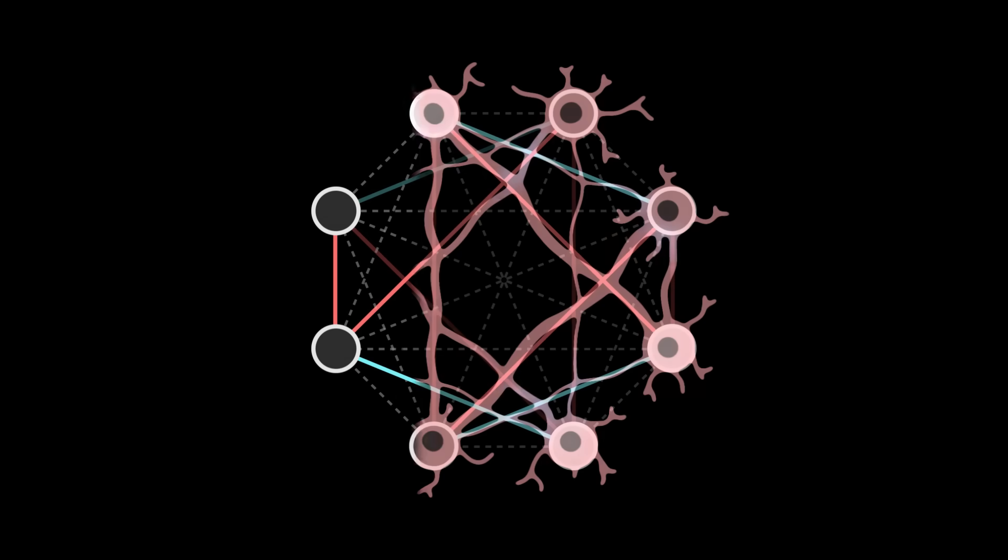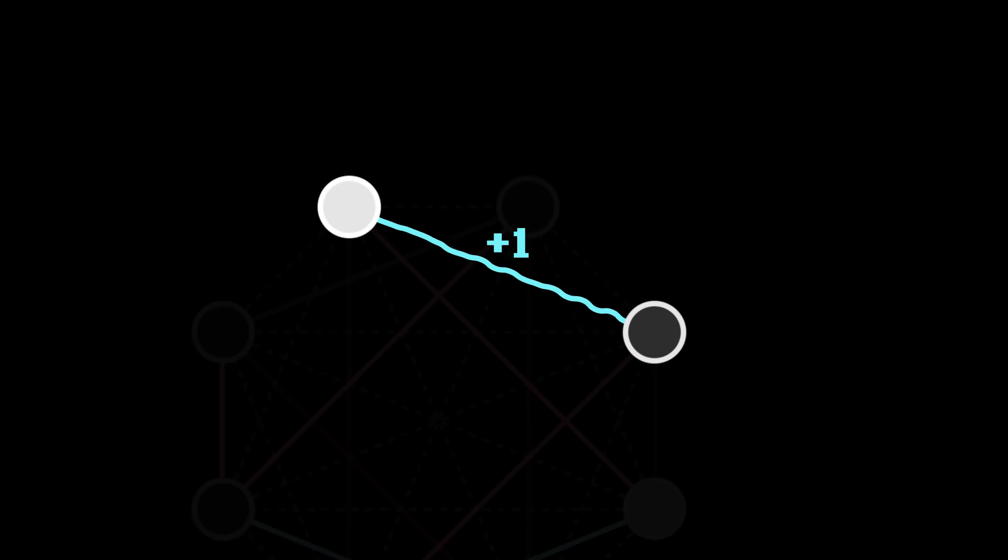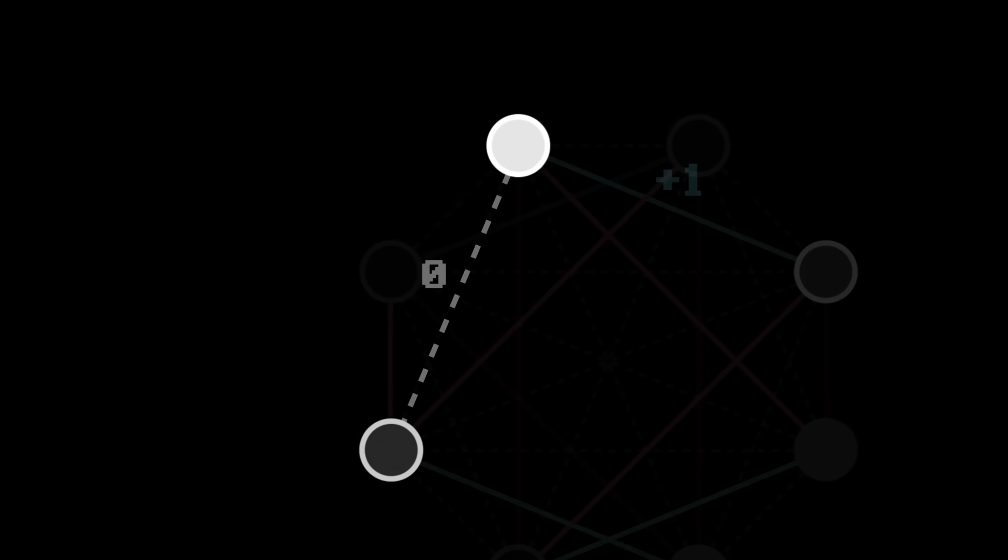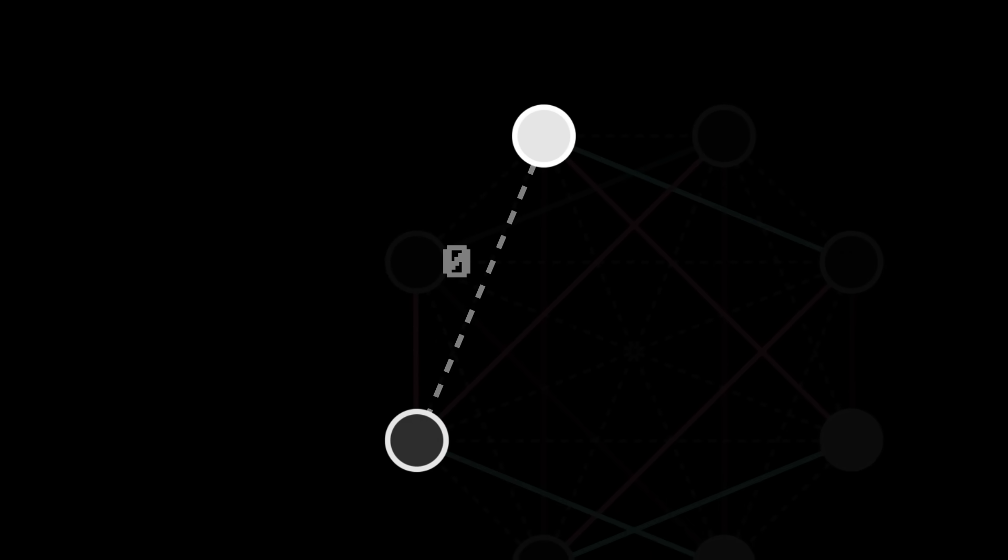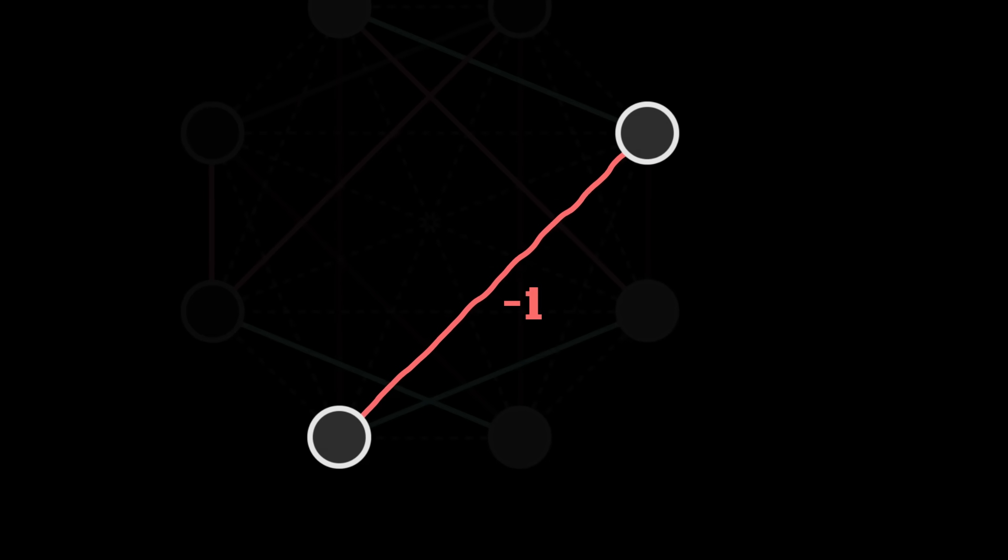As with the spins, the neurons interact with each other. But this time, each synapse carries a weight coefficient that governs the influence between the neurons it connects. Some synapses have a positive weight, pushing the neurons to adopt the same state. Others have a null coefficient, so the neurons do not influence each other. Others still carry a negative coefficient, pushing the neurons towards opposite states.